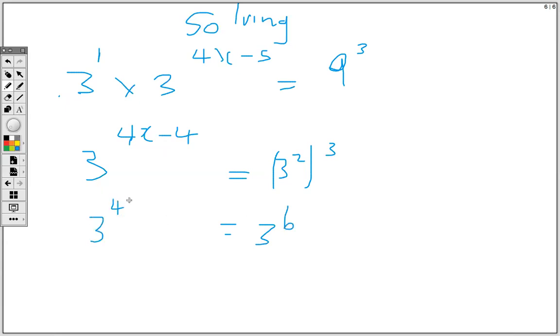Now we have 1 base on either side, so we can go ahead and drop the base and equate the powers to be equal. So we have 4x minus 4 is equal to 6.